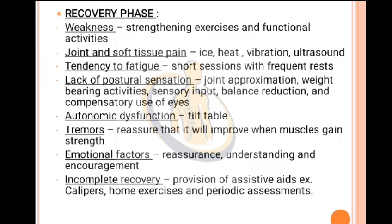Recovery Phase PT Management: Weakness — strengthening exercises and functional activities. Joint and soft tissue pain — ice, heat, vibration, and ultrasound. Tendency to fatigue — short sessions with frequent rests. Lack of postural sensation — joint approximation, weight-bearing activities, sensory input, balance, and compensatory use of eyes. Autonomic dysfunction — tilt table. Tremors — reassure that improvement occurs as muscle strength returns. Emotional factors — reassurance, understanding, and encouragement. Incomplete recovery — provision of assistive aids such as calipers, home exercises, and periodic assessments.